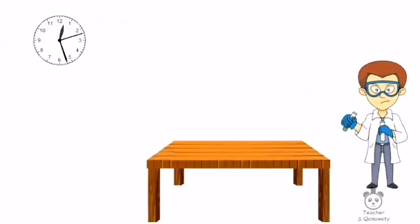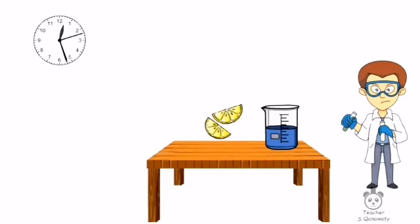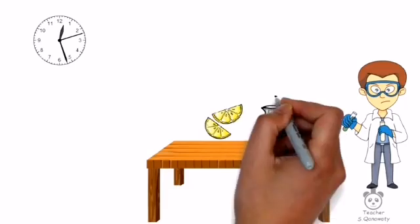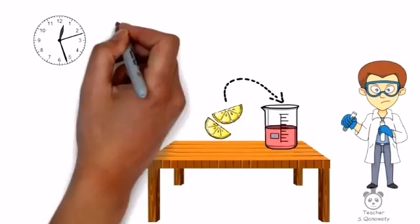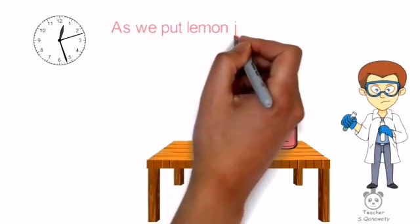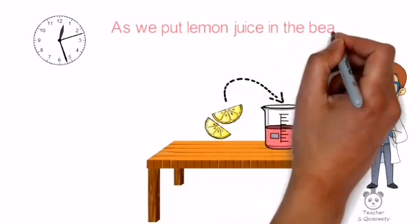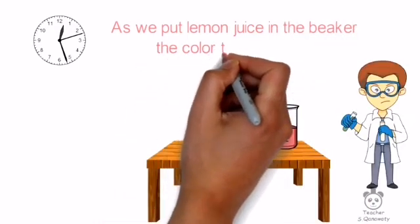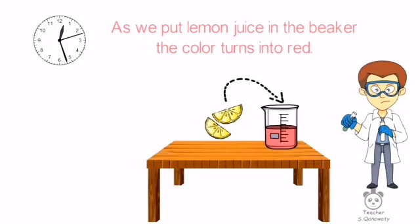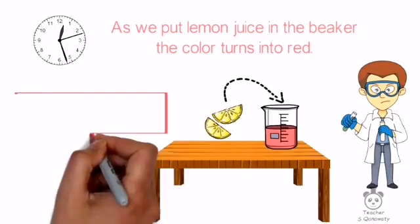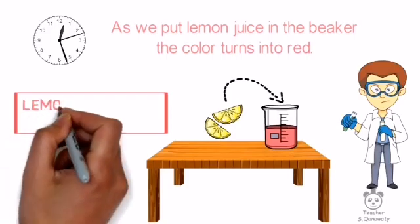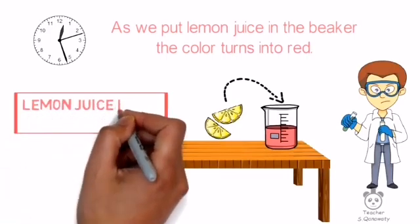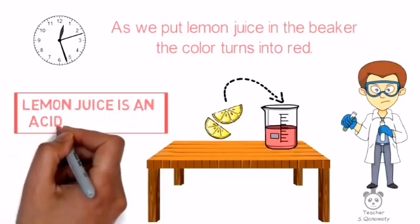In the third experiment, we mix some lemon juice with our indicator. Suddenly, the color becomes red. Whoa, what a magical transformation! Chemistry is a source of happiness. Our indicator turns red when it's mixed with an acid. Lemon juice is an acidic solution, that's why this color change occurs.